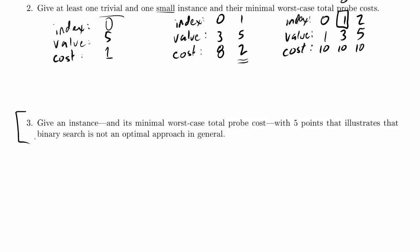We're working on problem 4.3 of the Computer Science 320 2014 Winter II Final Exam Practice Problems. Give an instance and its minimal worst-case total probe cost with five points that illustrates that binary search is not an optimal approach in general. This answers the question of whether binary search is an optimal approach according to this minimal worst-case total probe cost measure. This isn't necessarily the measure to use to decide whether an algorithm is optimal, but this problem has forced us in that direction.